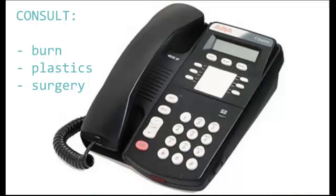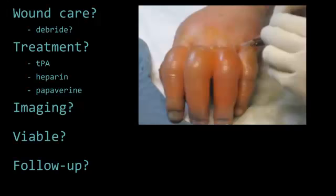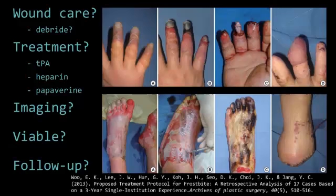In the ER, call your burn, plastics, or surgery consults. Ask them about wound care and debridement in the next couple of days. There are also some controversial treatments that might be available at your center — TPA or heparin. Those consultants may do imaging in the next few days to determine the extent of vascular injury and tissue viability. As noted, these injuries take a long time to demarcate, and patients will need follow-up for possible skin grafting or amputations.